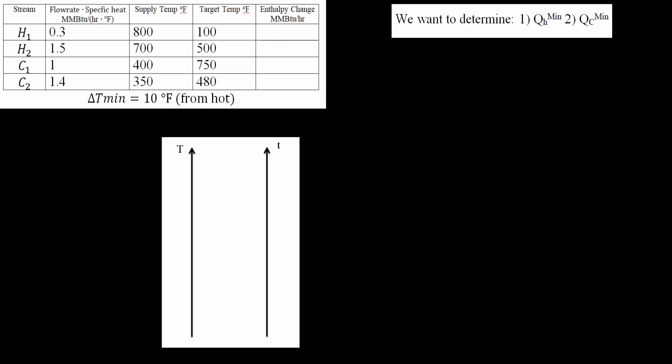To calculate the enthalpy change, it's your flow rate times specific heat times target temp minus supply temp. So for H1: 0.3 times (100 minus 800) gives negative 210. For H2: 1.5 times (500 minus 700) gives negative 300. For C1: 1 times (750 minus 400) gives positive 350. And for C2: 1.4 times (480 minus 350) gives positive 130.